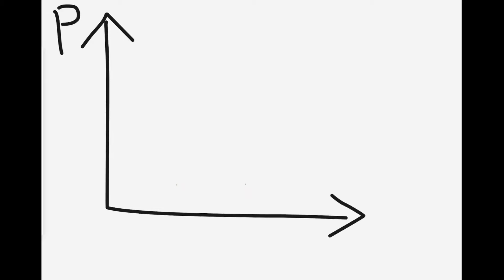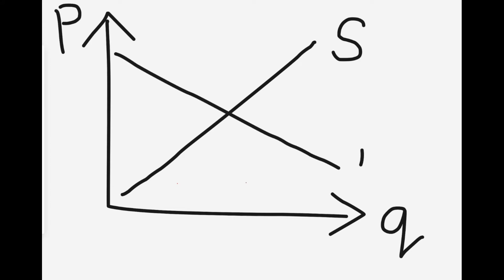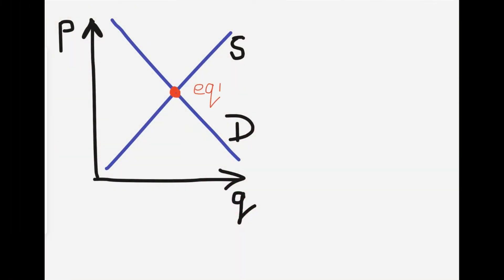Supply and demand is a graph where the vertical axis represents the price and the horizontal axis represents the quantity. Supply goes up and demand goes down. Supply is the relationship between prices and quantities that sellers want to sell, and demand is the relationship between prices and quantities that buyers want to buy. They intersect, and the point of intersection is called the market equilibrium, which has the equilibrium price and equilibrium quantity.